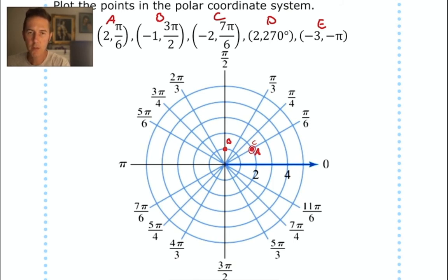But let's keep going through the rest of these points. Point D aiming at 270 degrees, which is also downward. So that's due south. It's the same thing as 3 pi over 2. This time we are moving positive two units. So we're going to move two units toward 270 degrees or toward 3 pi over 2. That puts us right there. We'll label that with D.